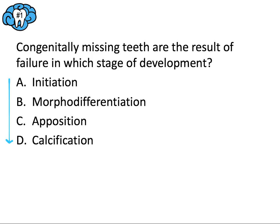Morphodifferentiation determines size and shape of the tooth — it's more structural and involves mineralization. At that point, the tooth is either there or it's not. If we're dealing with a completely missing tooth, that has to happen really early on. Initiation or proliferation — that bud stage — are the only two stages that could cause an extra or a missing tooth altogether, if there's a failure in that initial part of tooth development.